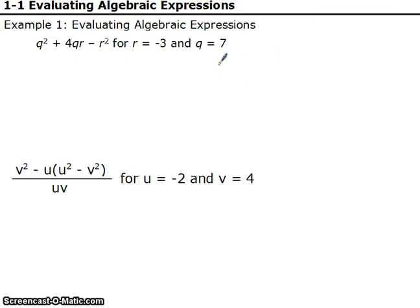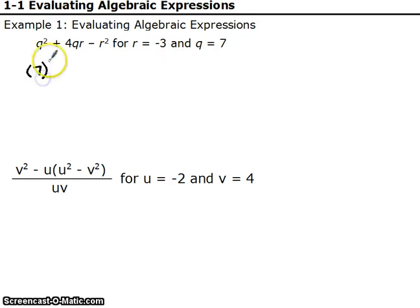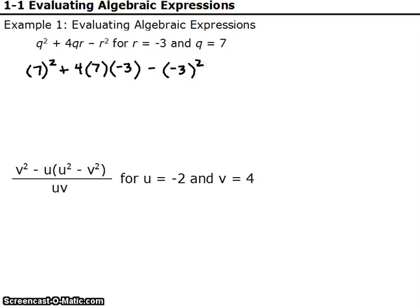So this we're basically going to do the same thing, except we've got to plug some numbers in first. You'll notice Q squared plus 4QR minus R squared. They want us to plug in a negative 3 for R and a 7 for Q. Anytime I plug a number in, I'm going to put it in parentheses. So I'm going to do 7 squared plus 4, then parentheses 7, and then R as well — parentheses negative 3 — minus then negative 3 squared. It's going to be beneficial if you know your perfect squares — I'd suggest knowing the first 1 through 20. It's really not that hard, and it's going to help you out big time when we get to factoring.